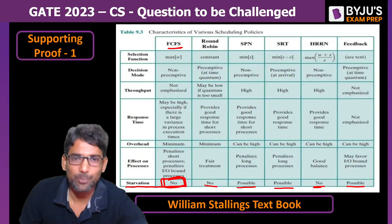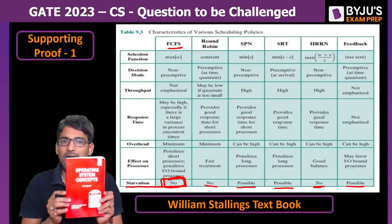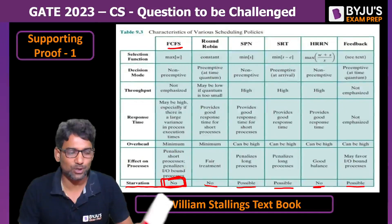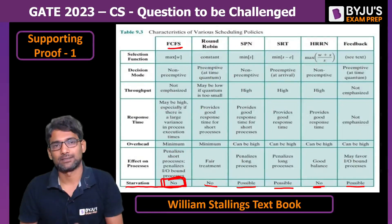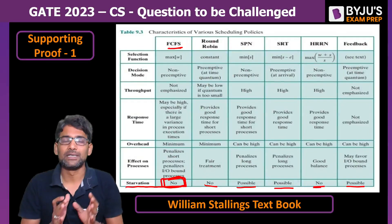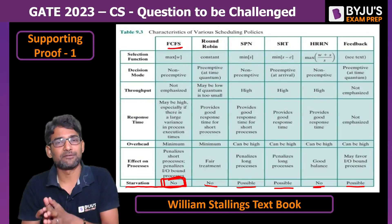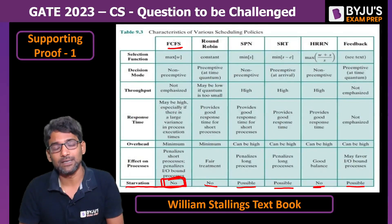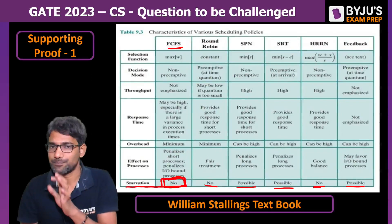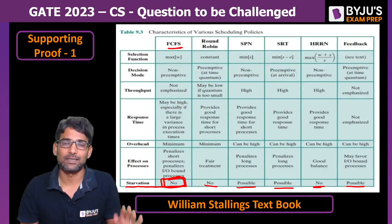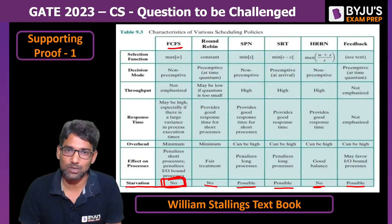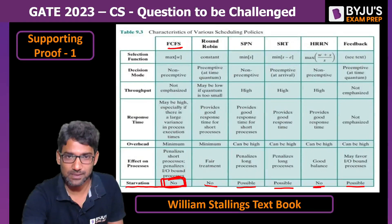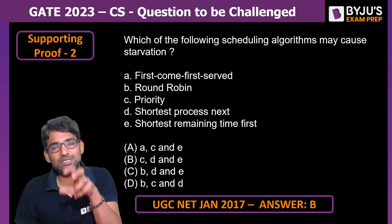In Operating System Principles by Galvin — another standard textbook we follow for GATE preparation — FCFS has the drawback of the convoy effect, which is mentioned. However, nowhere in Galvin's textbook is it stated that FCFS has indefinite blocking or starvation. FCFS has only the convoy effect — not starvation.